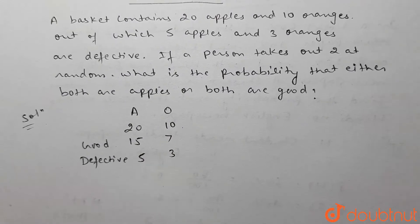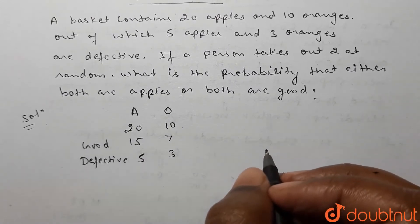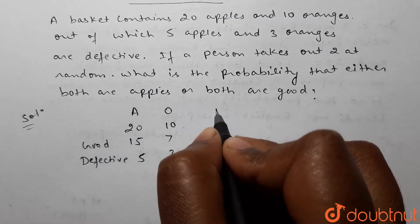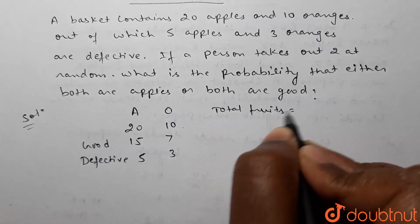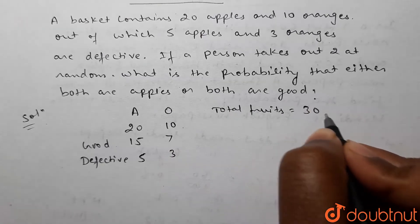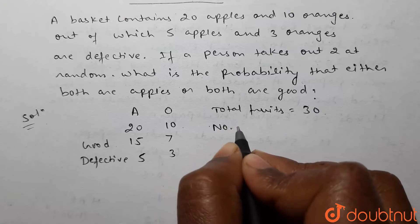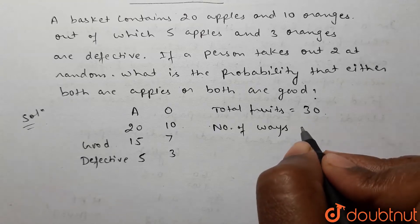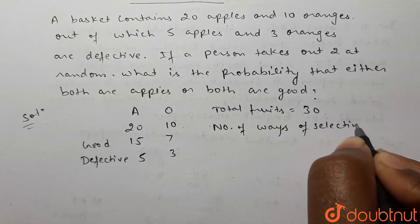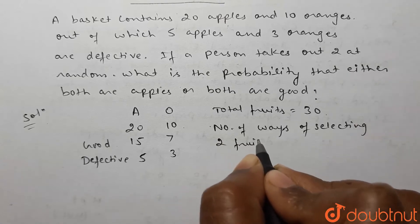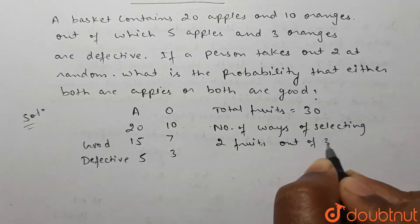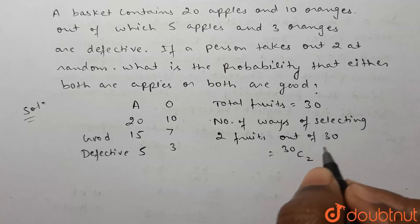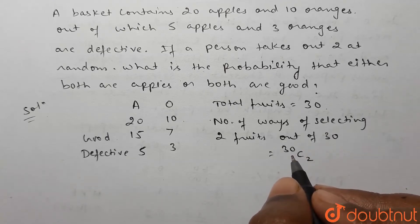A person takes two fruits at random. Total number of fruits are 20 apples plus 10 oranges, which is 30. Number of ways of selecting two fruits out of 30 fruits will be 30C2.